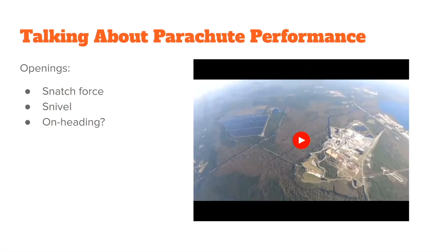When talking about parachute performance and deciding what you like in a parachute, we can break this down into three parts: openings, in-air characteristics, and landing. For openings, we have snatch force — the force felt when the lines are stretched out and under load. Snivel is the amount of time the slider stays up before it travels down the lines. And many people are concerned about whether they'll have an on-heading opening, or whether the parachute is known for searching around before taking off in a certain direction.